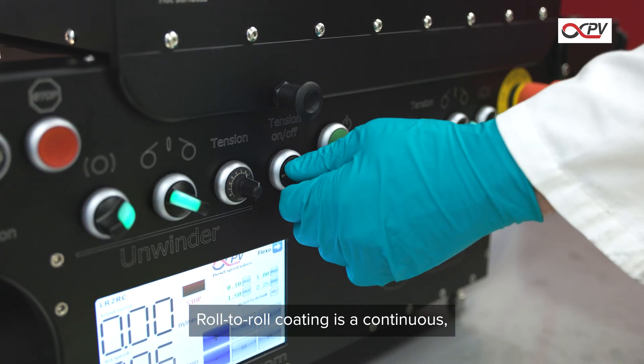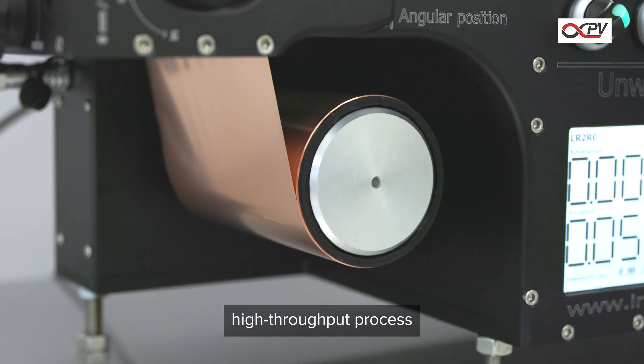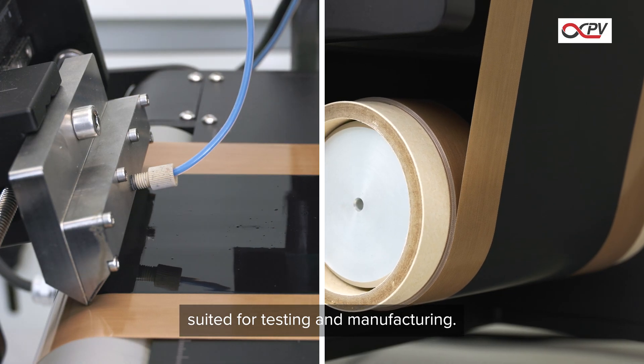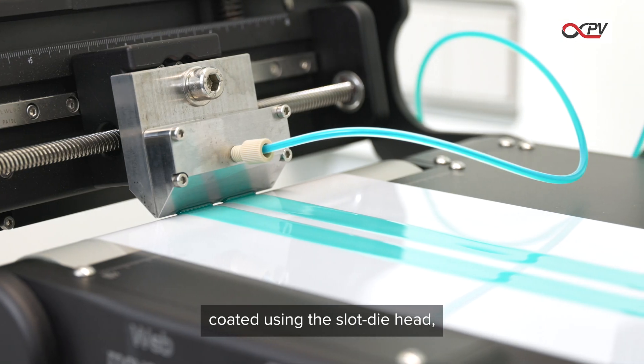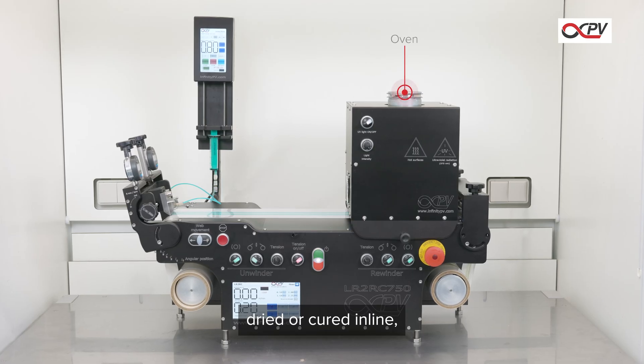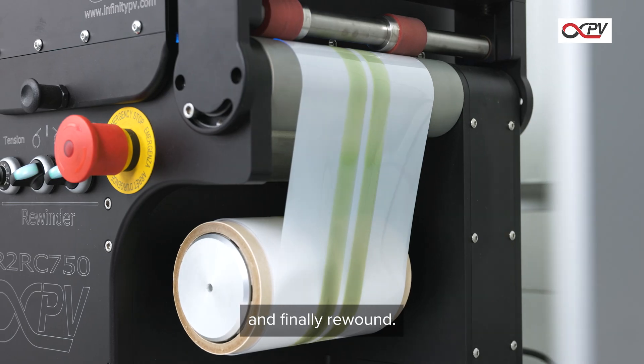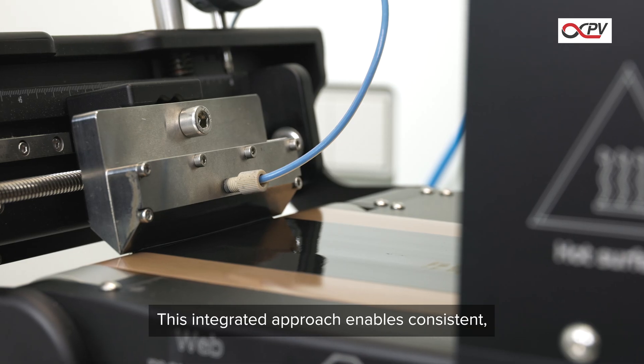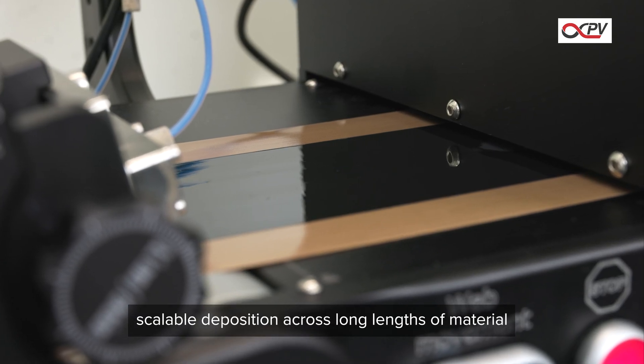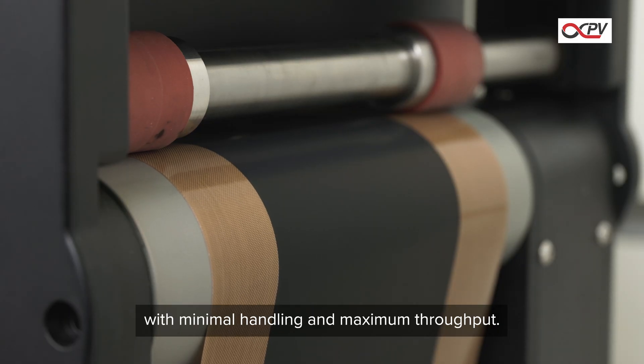Roll-to-roll coating is a continuous, high-throughput process suited for testing and manufacturing. The flexible substrate is unwound from a roll, coated using the slot die head, dried or cured in line, and finally rewound. This integrated approach enables consistent, scalable deposition across long lengths of material with minimal handling and maximum throughput.